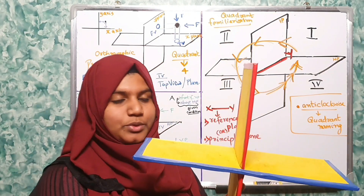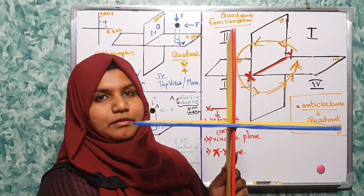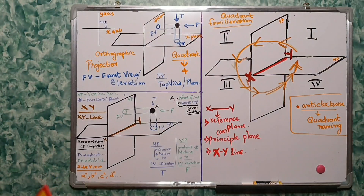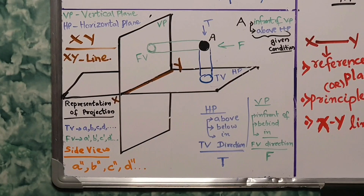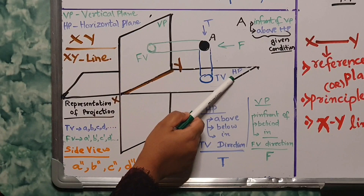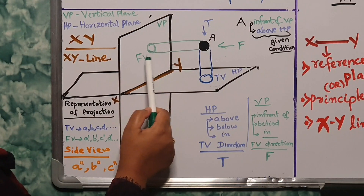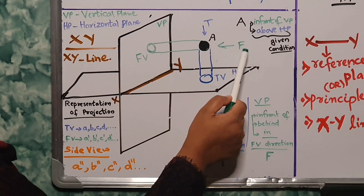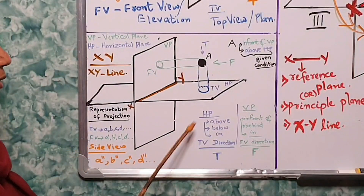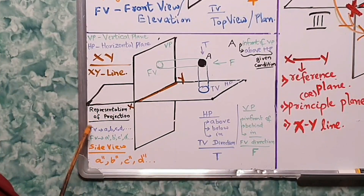Now let's look at the first quadrant. This is the first, second, third, fourth quadrant — arranged in an anti-clockwise plane. If this is the first quadrant, this is the vertical plane, the horizontal plane, and the XY line. The point is the answer to the front view. The FV represents the TV — the top view. We will study the HP and VP, the representation of the top view and the front view.